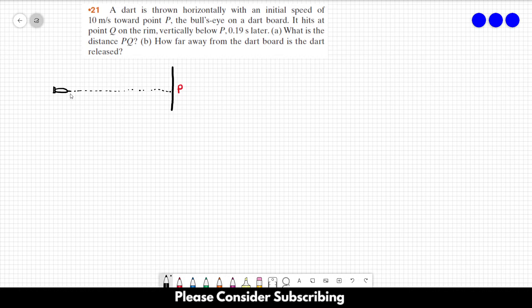However, we have gravity in our world, so the dart goes like this and hits point Q, which is below point P. So this is what truly happens.